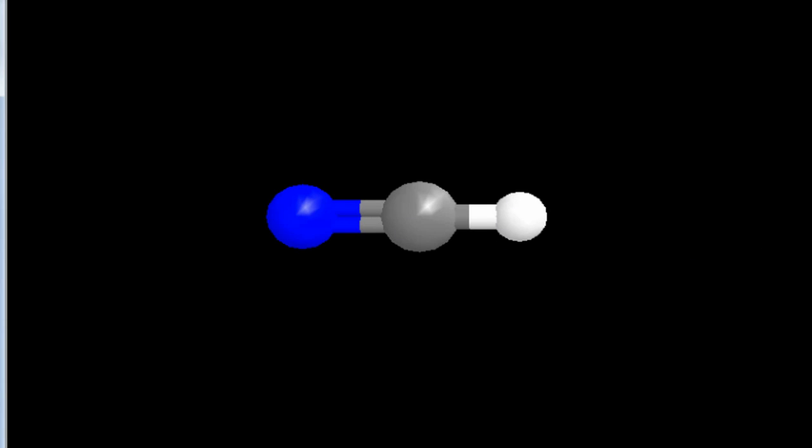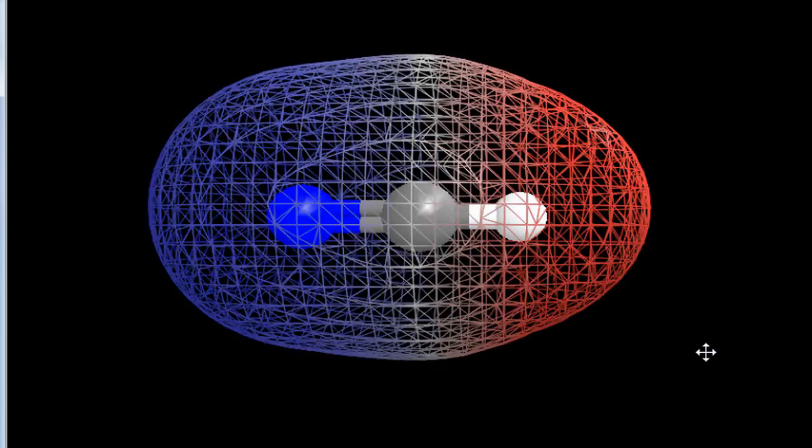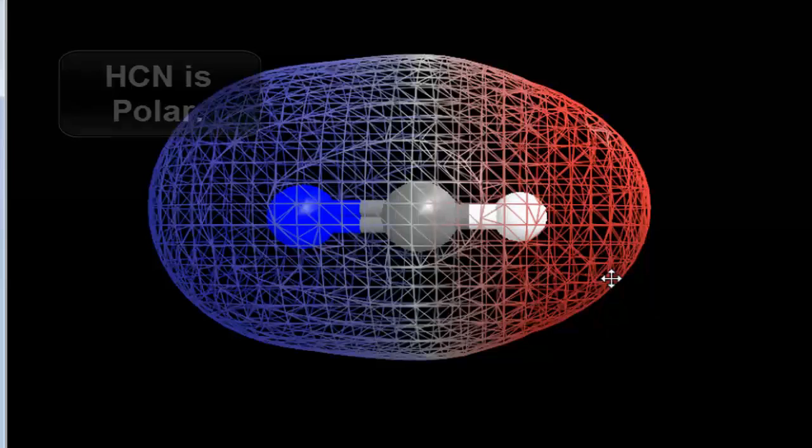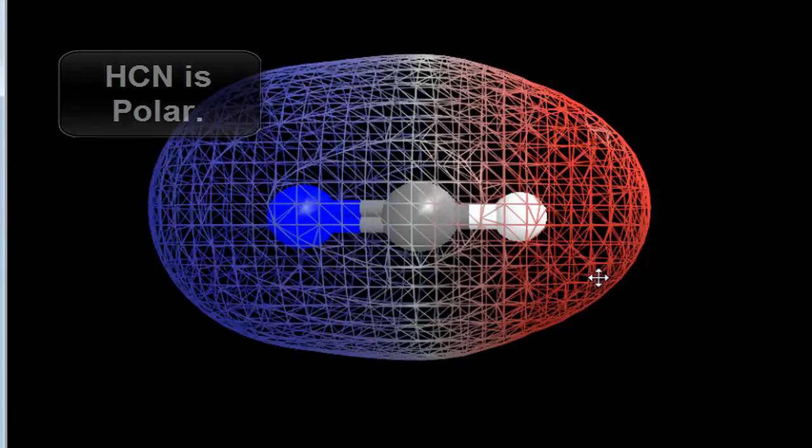If we look at the molecular surface for HCN, you can also see there's a big difference. We have a very negative side here and a positive side here. So this is going to be a polar molecule because of the difference.